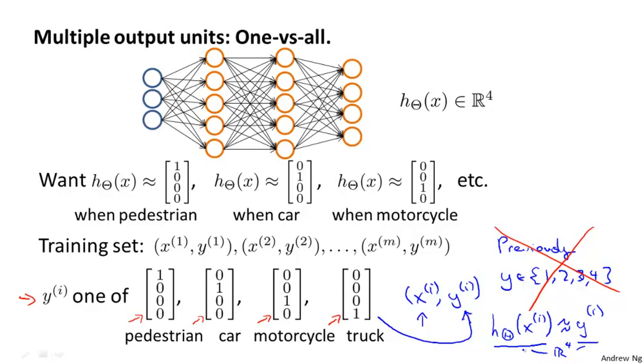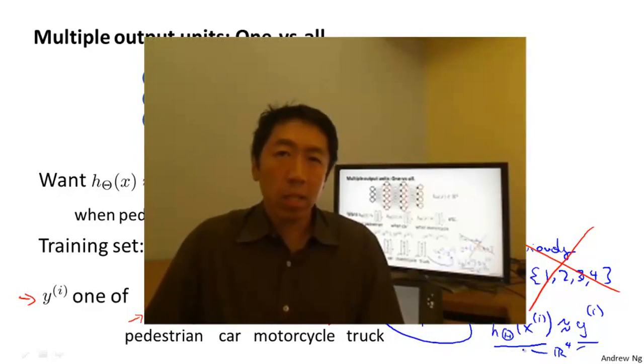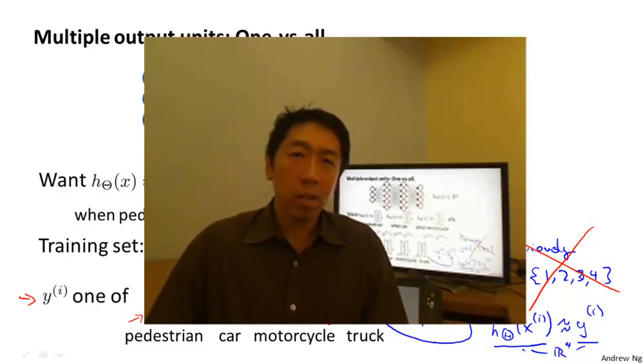So that's how you get a neural network to do multi-class classification. This wraps up our discussion on how to represent neural networks, that is, on our hypothesis representation. In the next set of videos, let's start to talk about how to take a training set and how to automatically learn the parameters of the neural network.